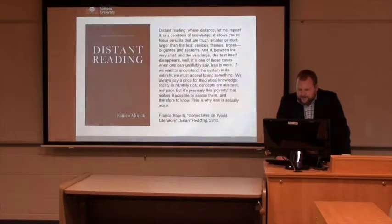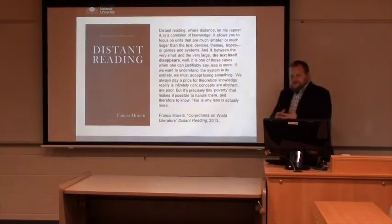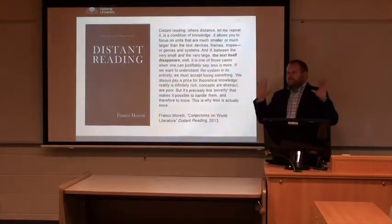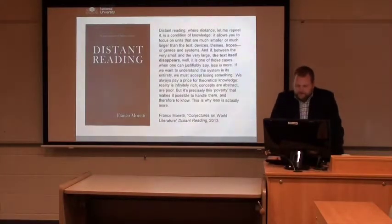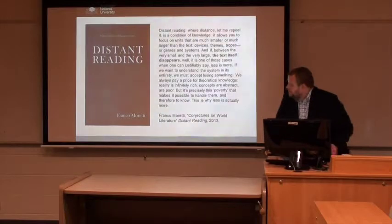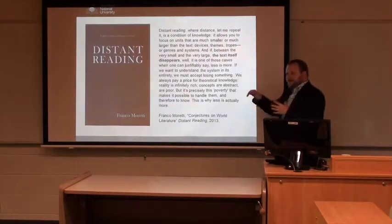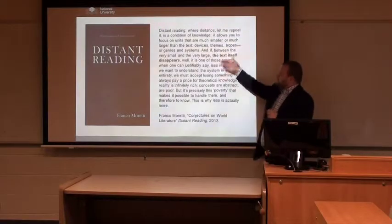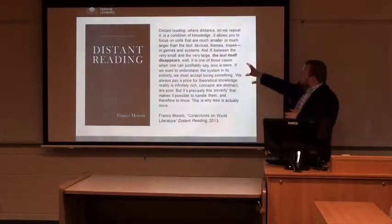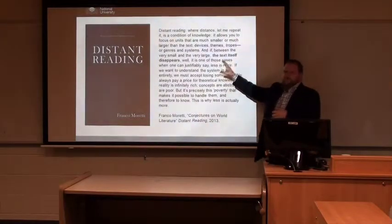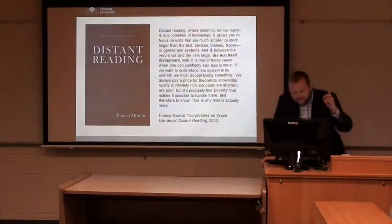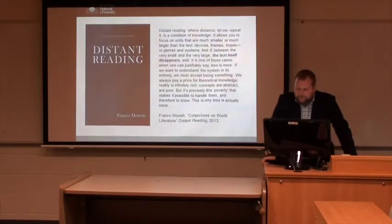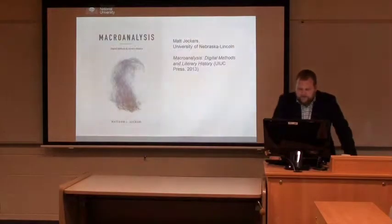Moretti gets around this because there's a problematic relationship to the text behind the graph — behind the graph of all these texts out of which the graph is generated. I'm interested in text as a literary scholar. Franco Moretti gets around this in an intriguing but somewhat problematic way: between the very small formalistic components of the text and the very large, the text itself disappears — and for him that's fine. If we want to understand the system in its entirety, we must accept losing something, and for him that something is the text. But I'm not ready to follow him there.